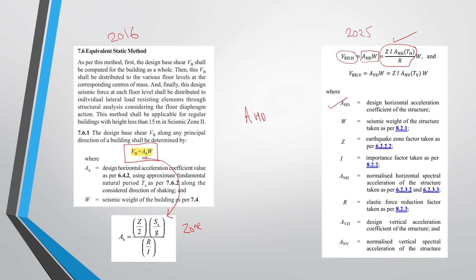So if you compare this formula and the 2016 formula, the first important thing is the zone factor. In 2016, the approach was the design-based earthquake is assumed to be half of maximum considered earthquake, so that's why there was a factor Z by 2 in 2016. But in 2025, there is only Z, there is no Z by 2.